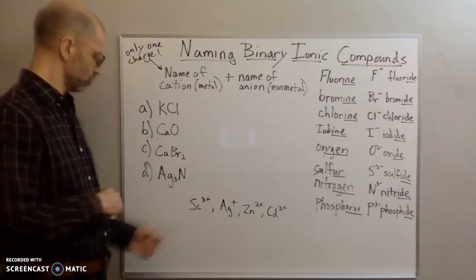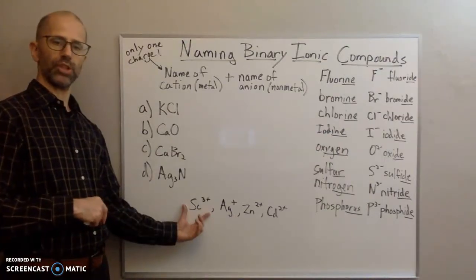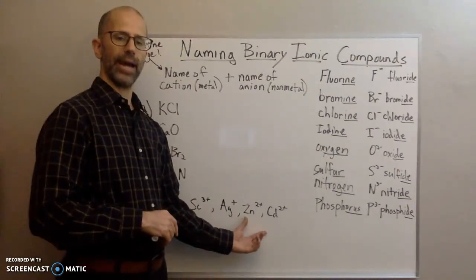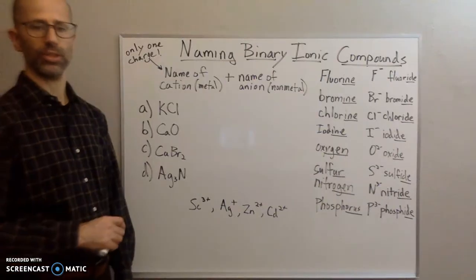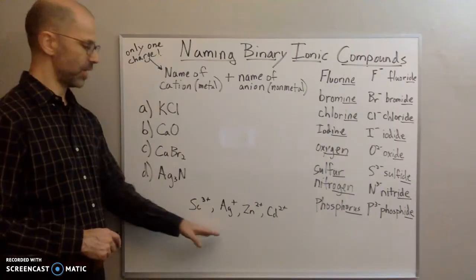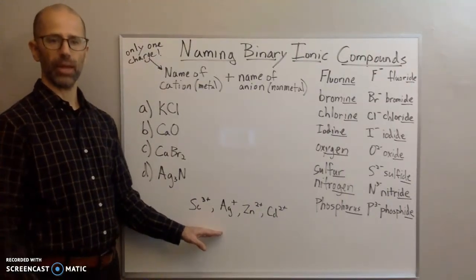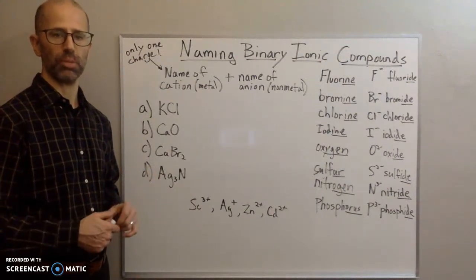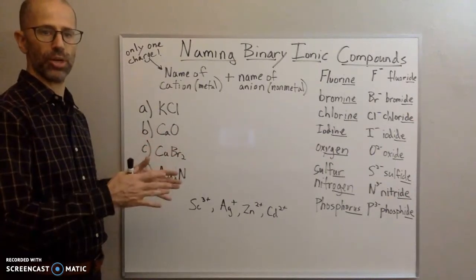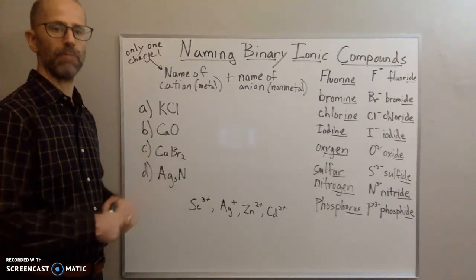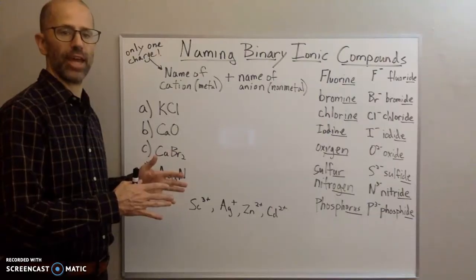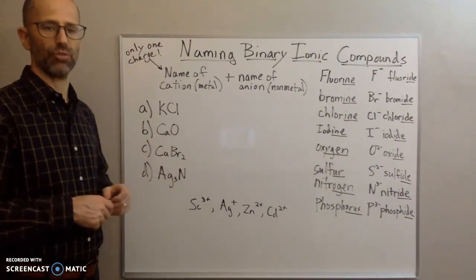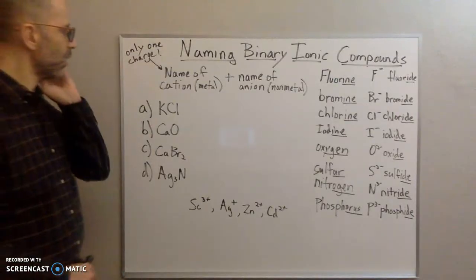There are also a few transition elements that have only one charge. Scandium has only a 3+ charge. Silver has only a +1 charge. Zinc has only a 2+ charge, and cadmium has only a 2+ charge — you need to memorize those. For the main group elements, recall: groups 1A, 2A, and 3A have a positive charge equal to the group number. Groups 5A through 8A have a negative charge equal to the group number minus eight.